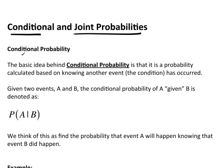So let's start off here with the idea of what a conditional probability is. The basic idea behind conditional probabilities is that it is a probability calculated based on knowing another event, the other event is actually the condition, has occurred. Now given two events, I'm going to call them A and B, they're arbitrary events, it doesn't really matter what they are right now for the sake of conversation.